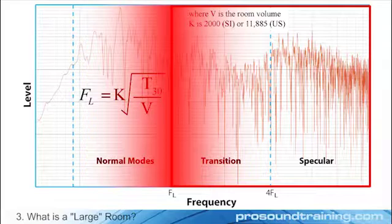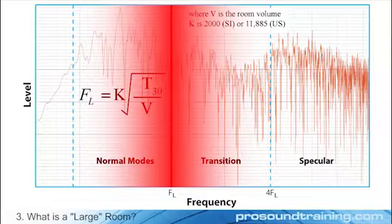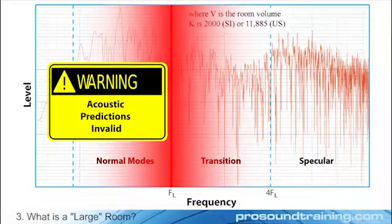Geometric acoustic assumptions are most accurate above four times F sub L. It's very important to keep this in mind when you are modeling rooms and designing sound systems. Some modeling programs don't warn you that you are working below critical frequency, and therefore your geometric acoustic predictions are invalid.